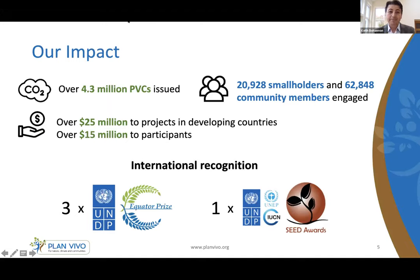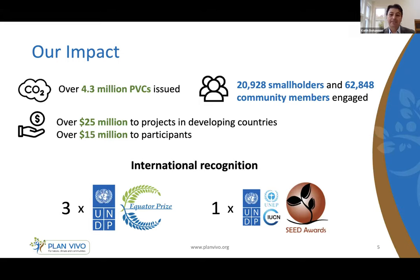In terms of our impact, today we've issued over 4 million Plan Vivo certificates — each certificate is equivalent to 1 tonne of CO2 emissions reduced. We're reaching over 20,000 smallholder farmers and engaging over 62,000 community members across Africa, Asia, the Pacific and Latin America. Through the projects, that's put $25 million into developing countries, and 60% of that — $15 million — is going directly to participants.